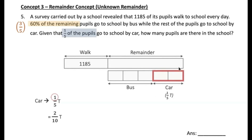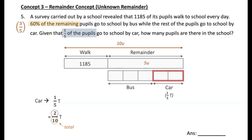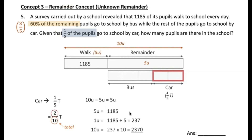So this entire top bar is 10 units and the remainder is 5 units. You can see 1,185 is 10 units minus 5 units, so 5 units equals 1,185. Therefore, 1 unit is 237. How many pupils are there in the school? The school has a total of 10 units, so 10 times 237 equals 2,370.